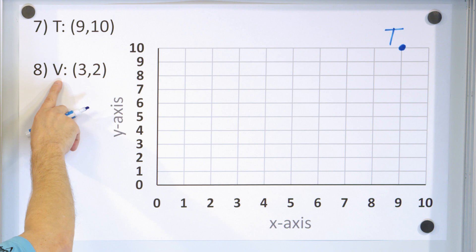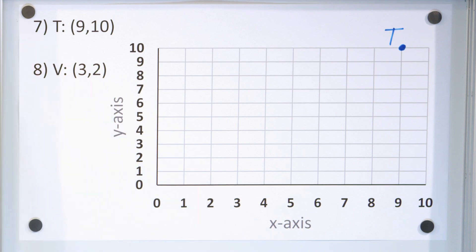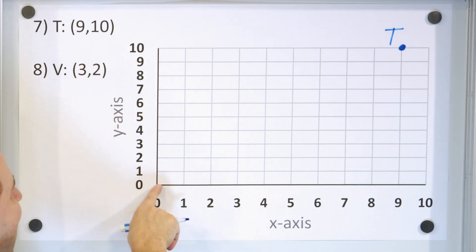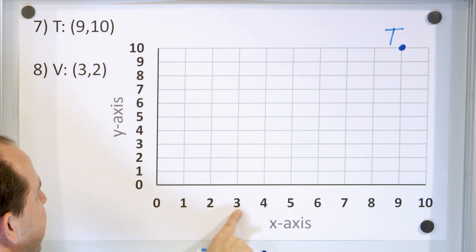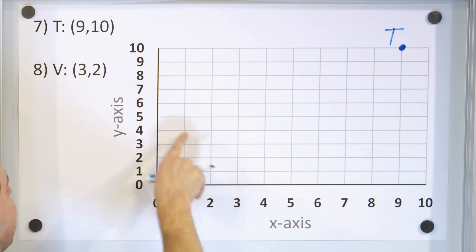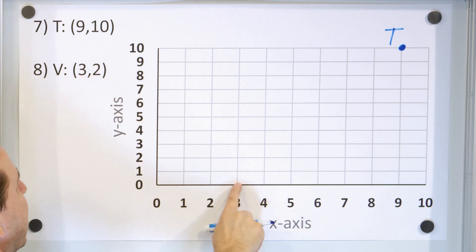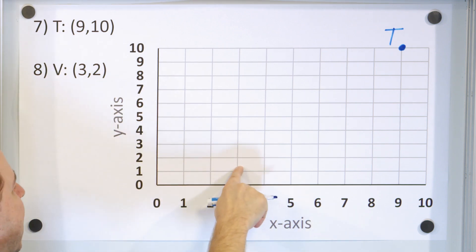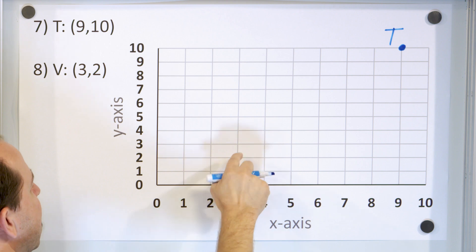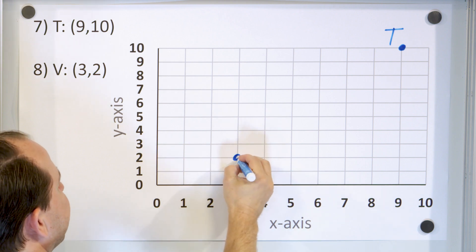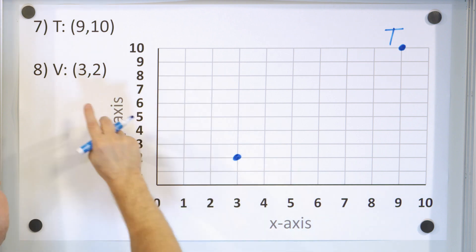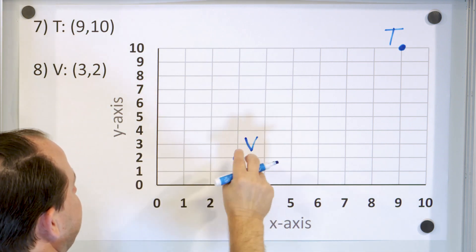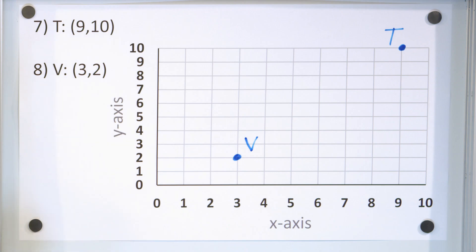Finally, point V is at the coordinate 3 comma 2. X is 3, we go along x equals 3, and then for y we go up 1, 2. Notice y is 2 and x is 3, so the point is right here. The label is point V.